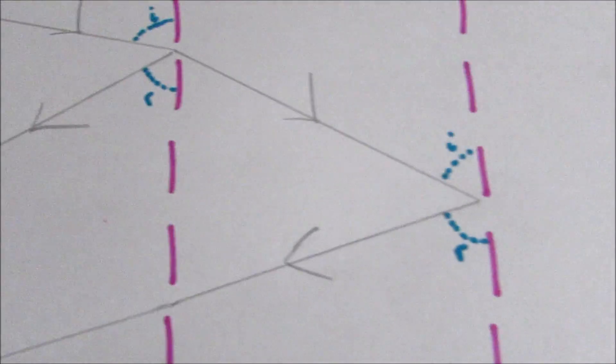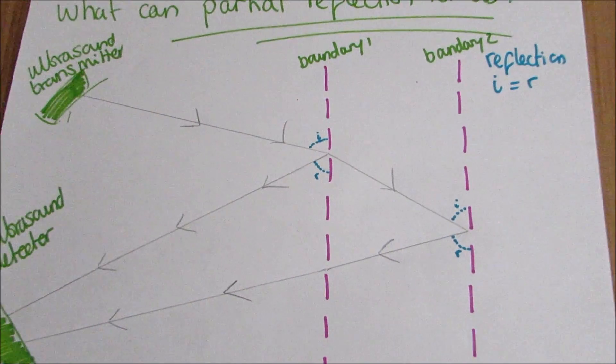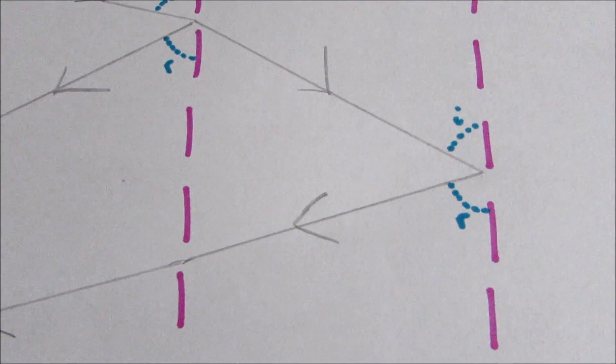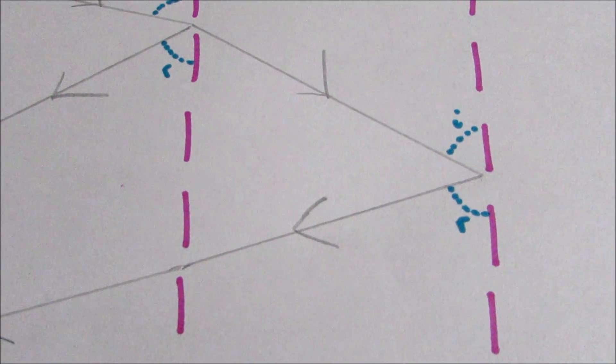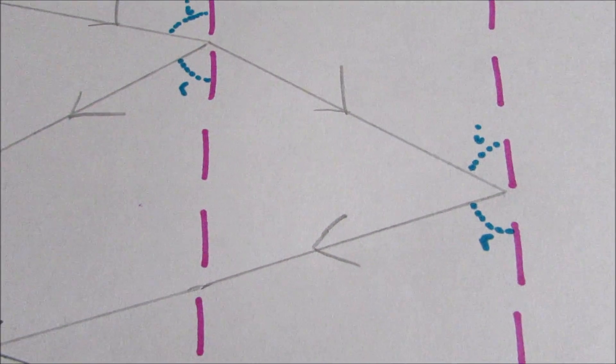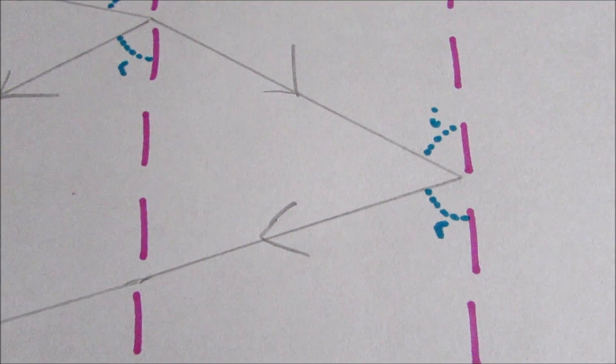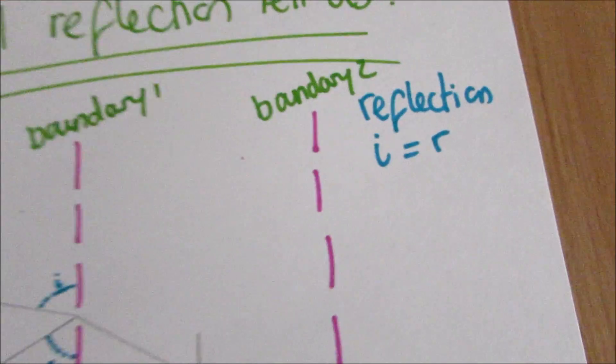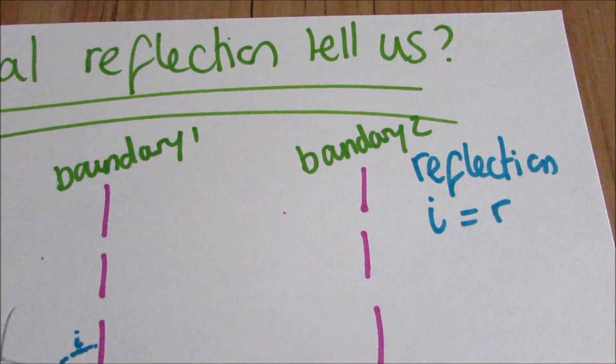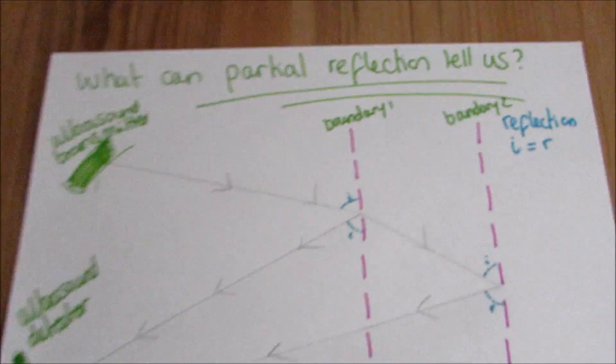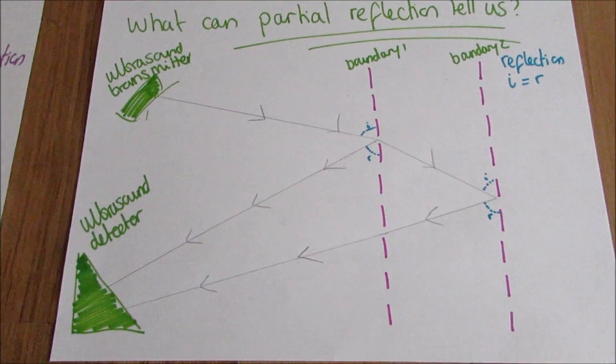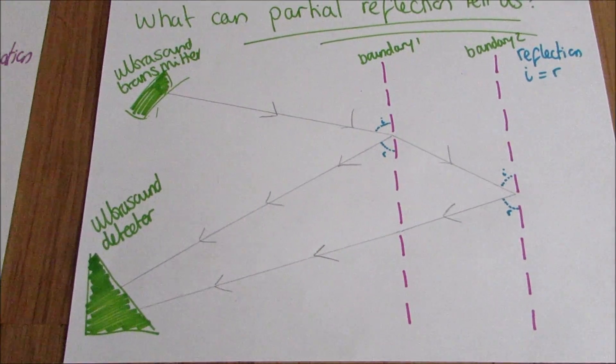The light continues on to the second boundary, boundary number two. And yet again, it is reflected. You'll also have some transmitted and refracted, but I haven't drawn that in. You'll notice my angle of incidence and my angle of reflection here. And for reflection, the angle of incidence equals the angle of reflection. Both of these signals are then sent back to the ultrasound transmitter.